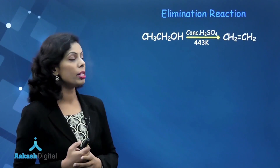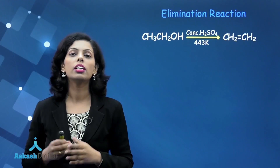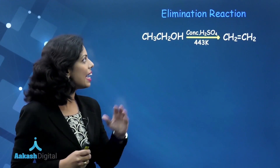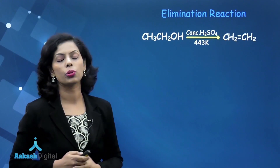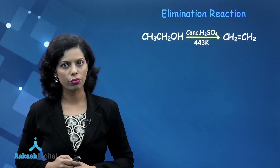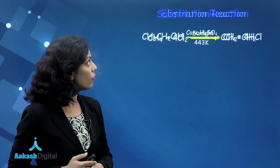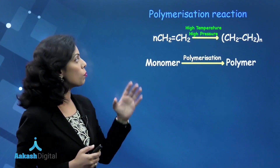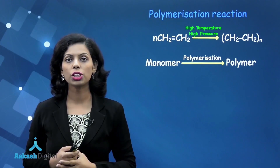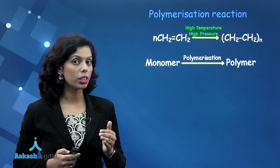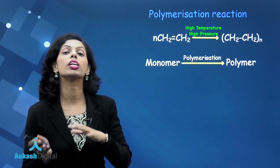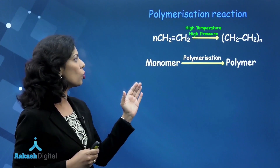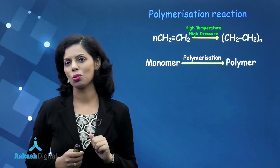We discussed the elimination reaction, in which beta elimination takes place and an unsaturated product is formed. Then we discussed the substitution reaction. Further, we discussed the polymer addition reaction, taking the example of conversion of ethene into polythene, where the monomer gets changed into a polymer.